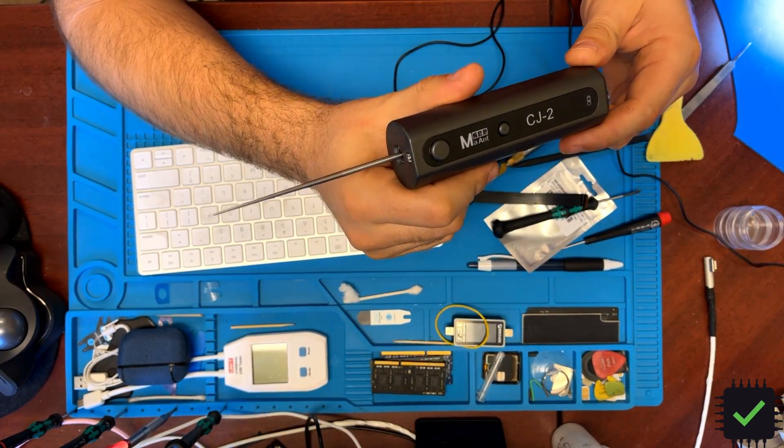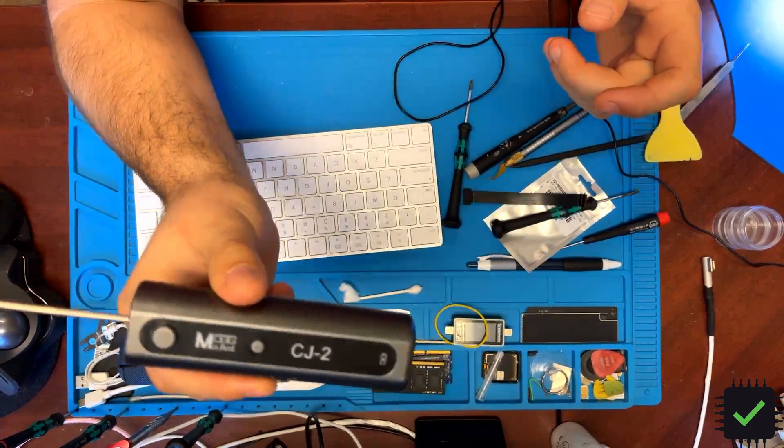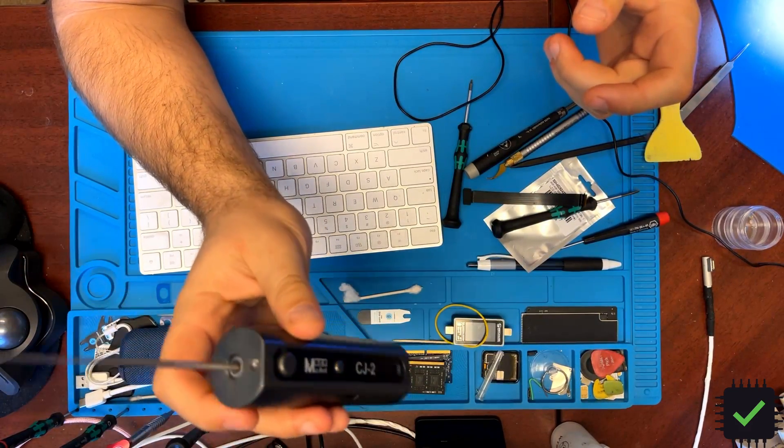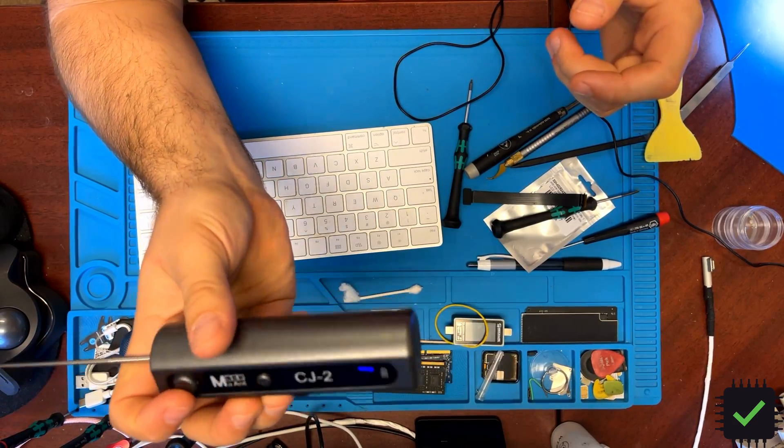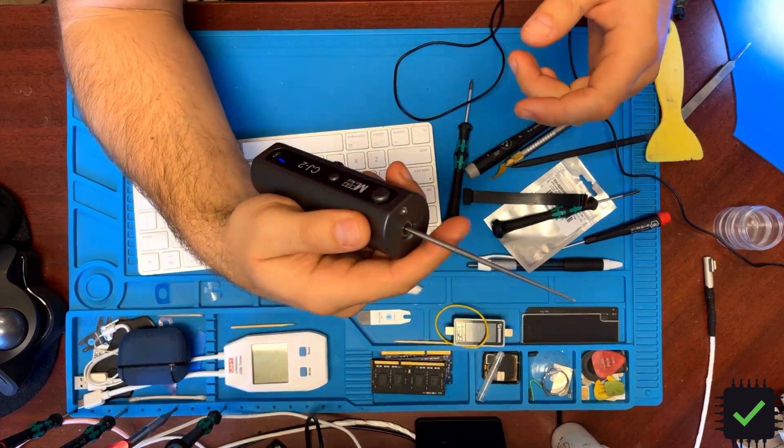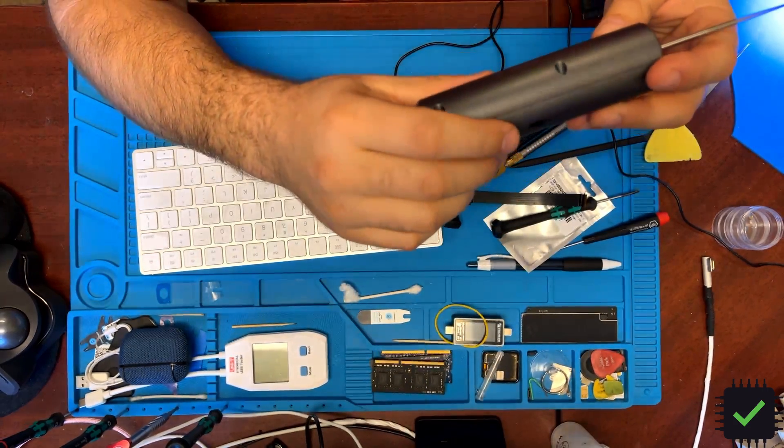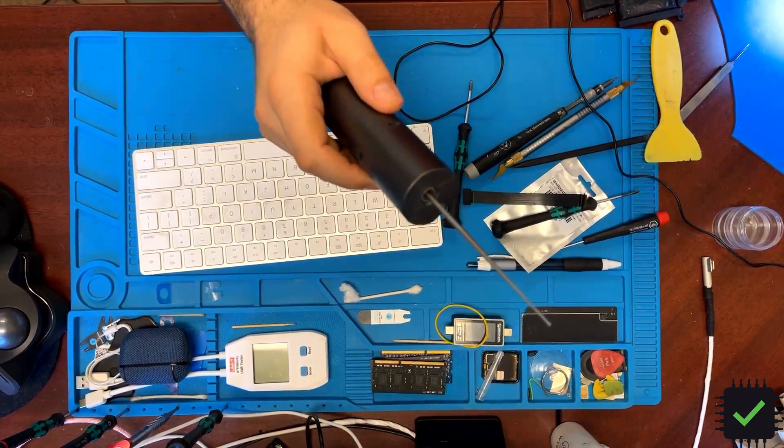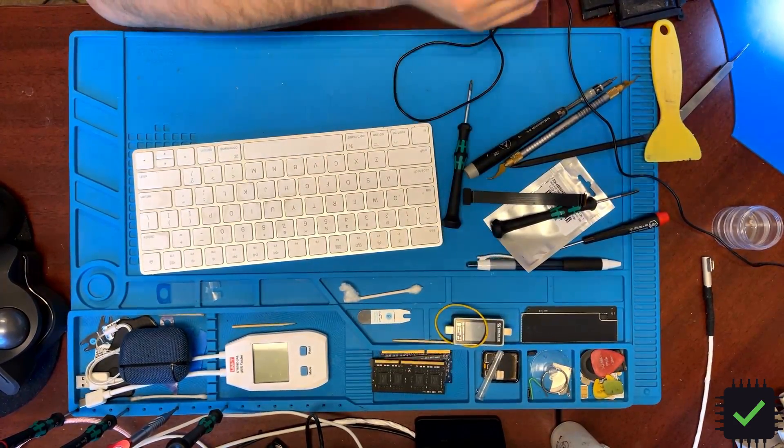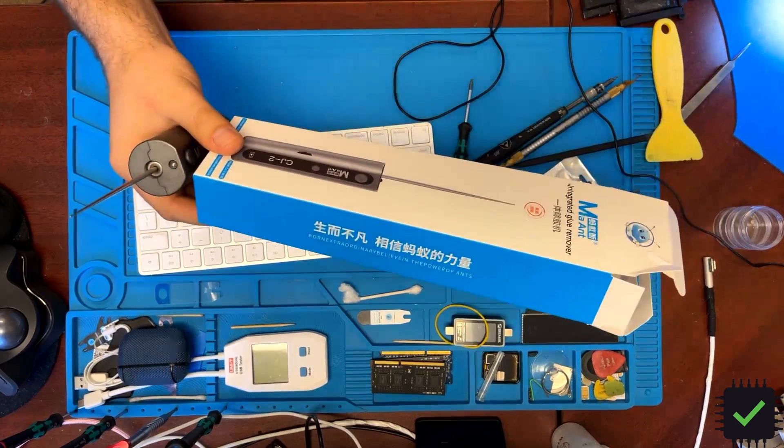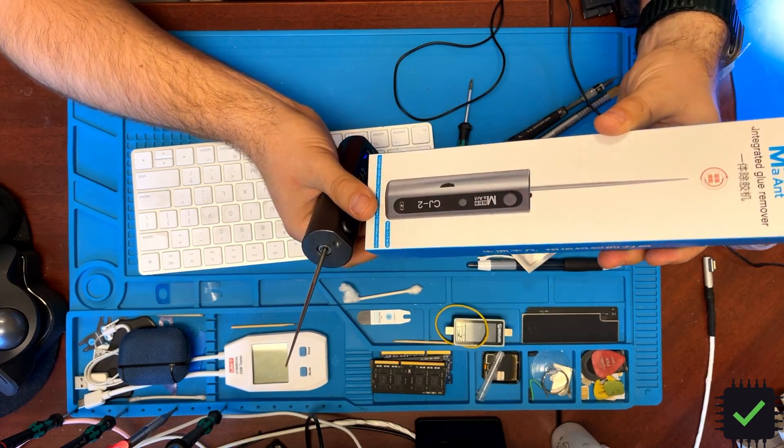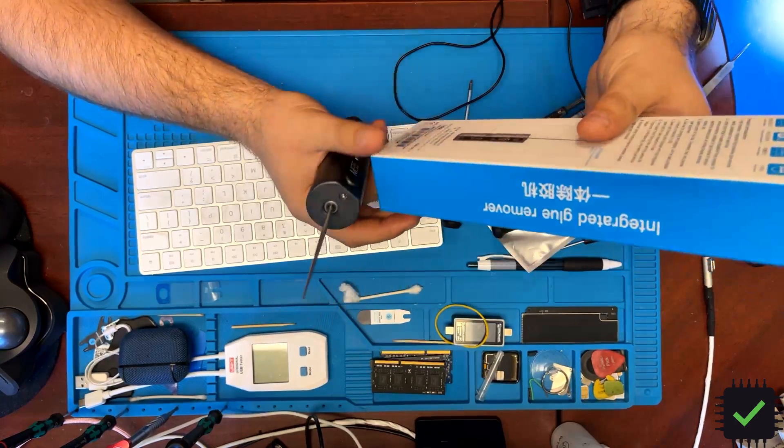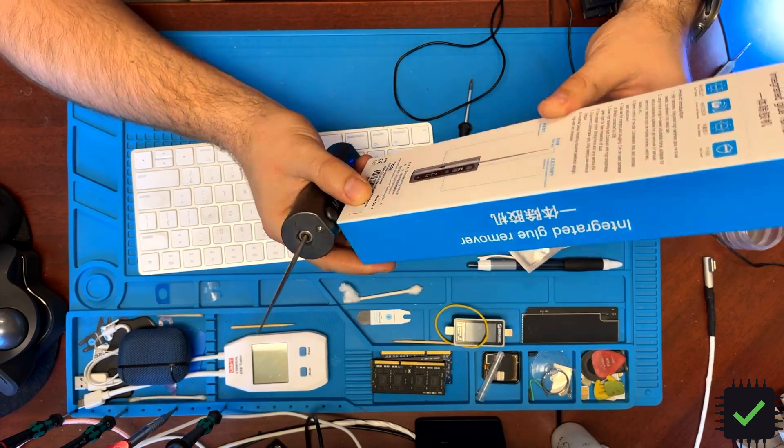I was using my tweezers in my previous video but this device is way better. Let me take a look at the box. This is the MANCJ2 chip device integrated glue remover.